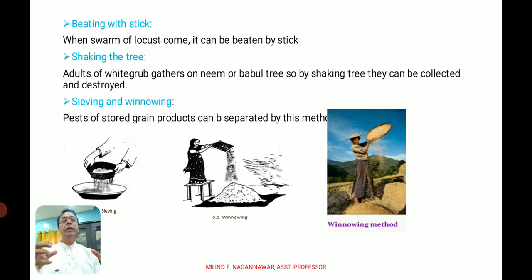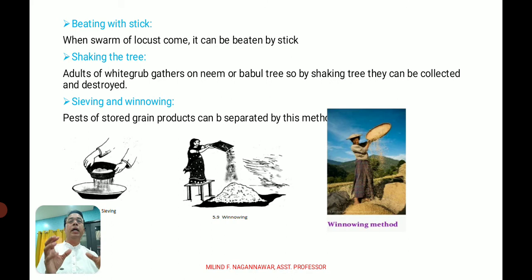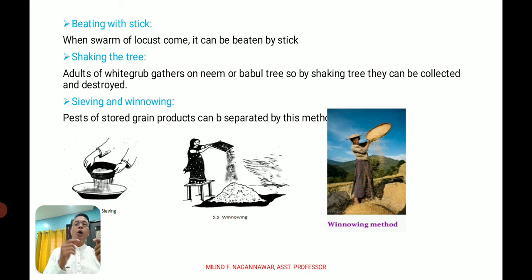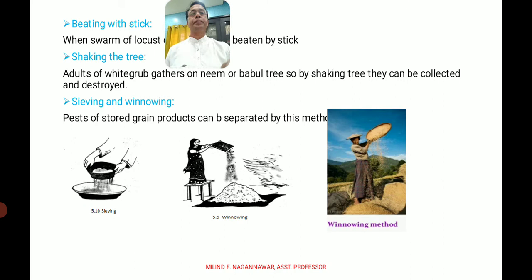Another mechanical method is beating with sticks. When a swarm — a mass or group — of locusts arrives at one place, they can be beaten with sticks. Similarly, white grub adults gather on neem or babul trees; when the branches are shaken, the adults fall to the ground and can be collected and destroyed. This shaking-and-beating method is an effective mechanical control technique.